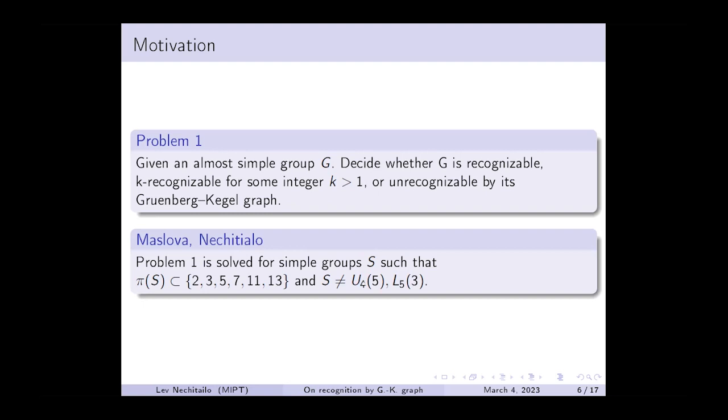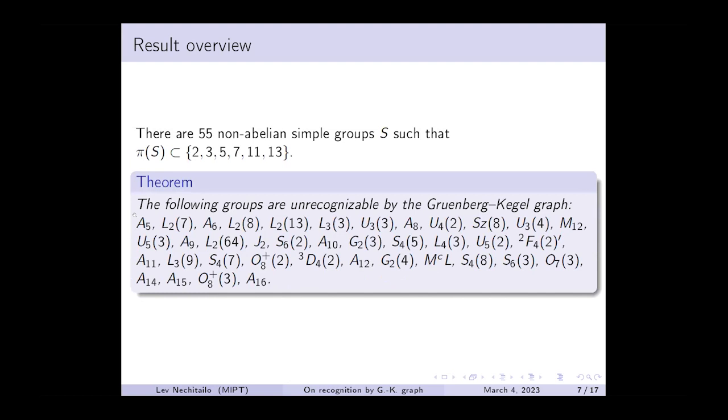Let me give some overview of our results. Here are the groups that we found to be unrecognizable by the Gruenberg-Kegel graph. For each of the groups from the list, an example of a group with the same Gruenberg-Kegel graph and non-trivial solvable radical was found. Note that many of the groups from the list were already known to be unrecognizable, but we checked and restructured these results accordingly.